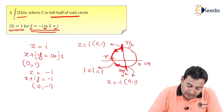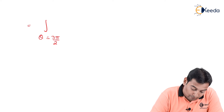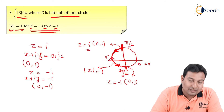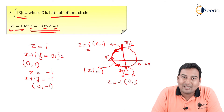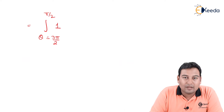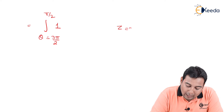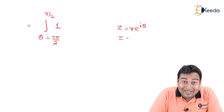Inside the integral we have |z|, and since it is the unit circle, |z| = 1. We have discussed that z = r·e^(iθ), and since r = 1, z = e^(iθ). And dz = i·e^(iθ) dθ.